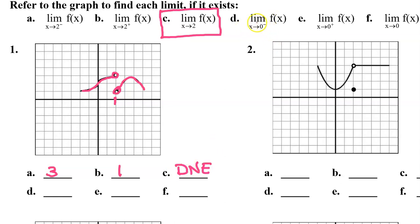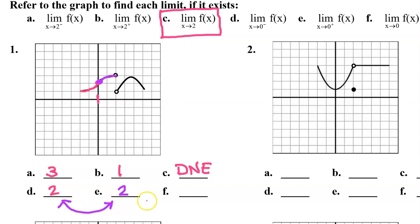Problem D. Let's find the limit as x approaches 0 from the left. Focusing on the x value of 0, as we approach 0 from the left we are approaching a y value of 2. How about the limit as x approaches 0 from the right? As we approach 0 from the right we are approaching that same y value of 2. Because the limit from the left equals the limit from the right, the overall limit as x approaches 0 is also 2.